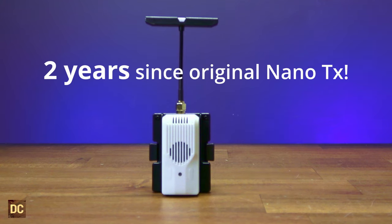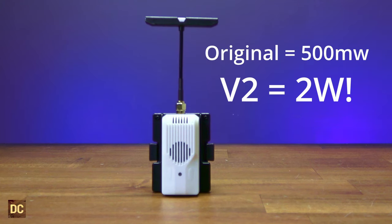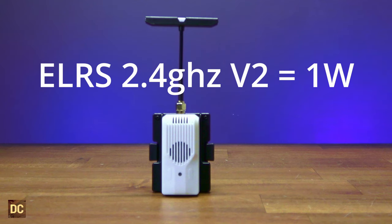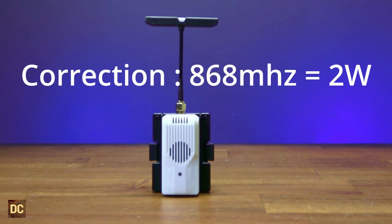And it's been two years since the original Nano TX came out from BetaFPV. And two years later, they've upgraded us to two watts of power. So this little micro size module can power up to two watts on 915 megahertz, which is kind of amazing. The 2.4 version will get you up to one watt, and the 866 version will also do one watt.